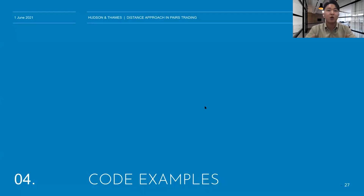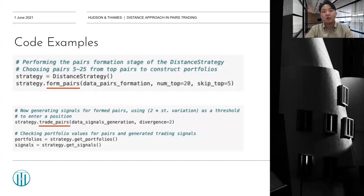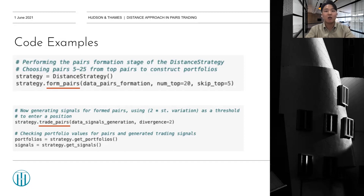Just in case you want to test your own strategy, I'll share the code of our lab to use this basic distance approach. As shown in the slide, these simple two lines of code can do the whole process from forming pairs to generating trading signals. There are some parameters you may adjust, such as the number of pairs you want to select or the trading threshold, which is set to two standard deviations as default. Please try out our lab module and try out different trading strategies to make your own.